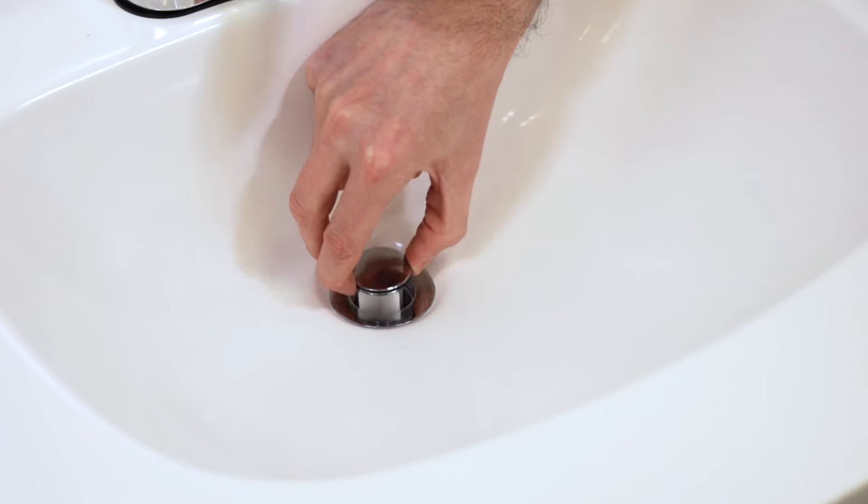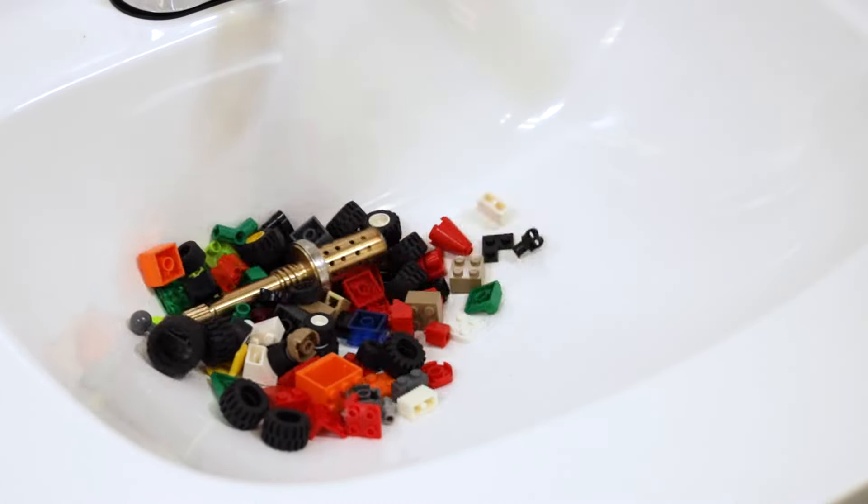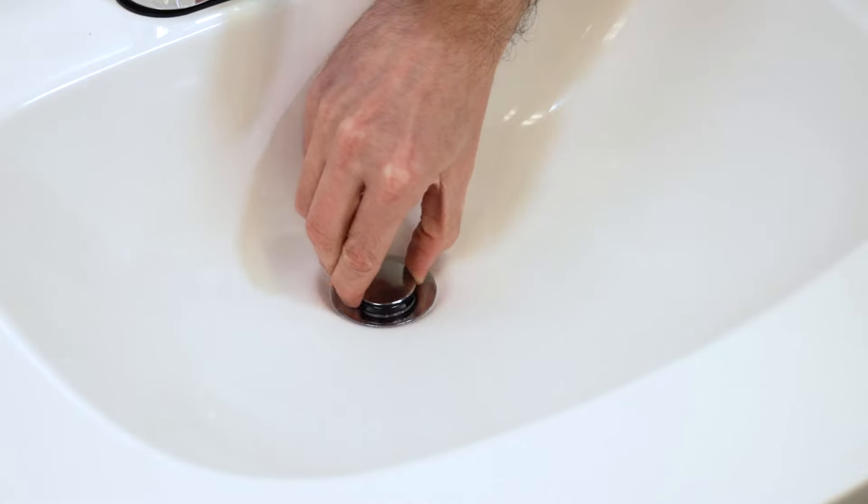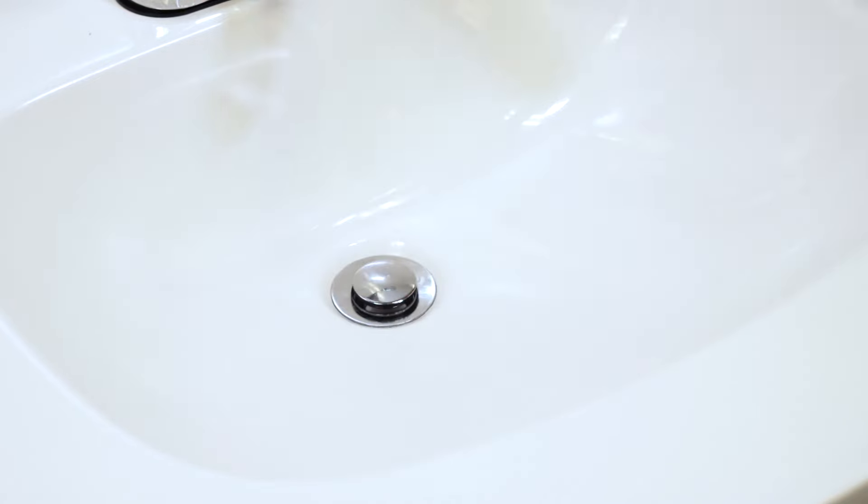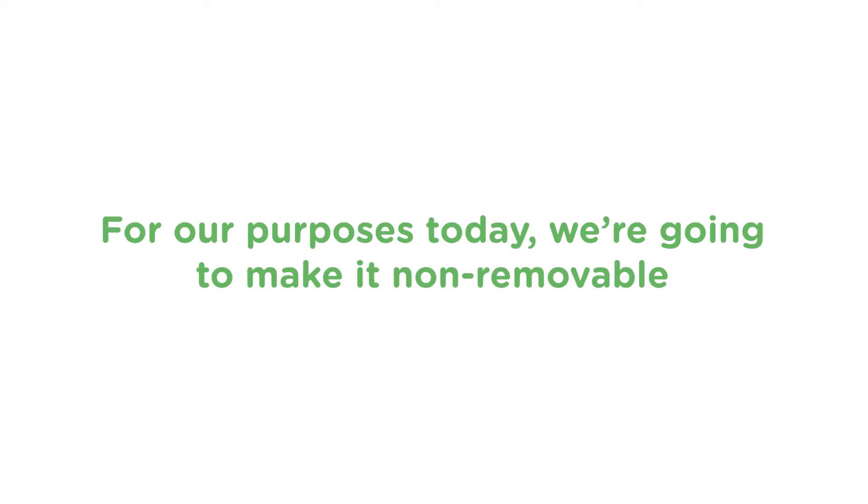If you choose removable, it makes it easier to clean the pop-up and the collar, but you also run the risk of misplacing the stopper. Lab drains with no stoppers have claimed more than a few pieces of jewelry and Legos over the years, never to be seen again. If you make it non-removable, it tends to form a better seal so you won't lose the stopper, but it makes it a little tricky to clean. As a rule of thumb, we suggest removable in residential spaces without kids and non-removable in public spaces or homes with little ones. For our purposes today, we're going to make it non-removable, but we'll explain the removable method as well.